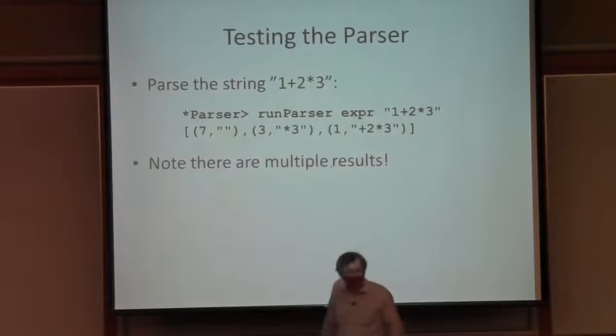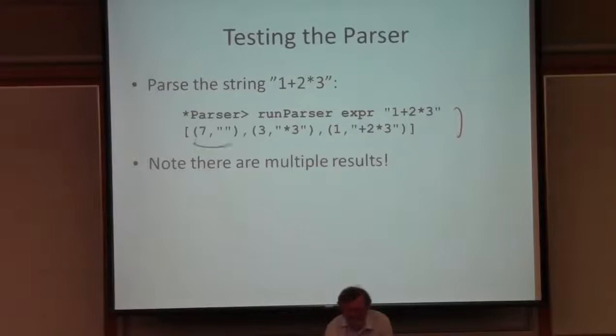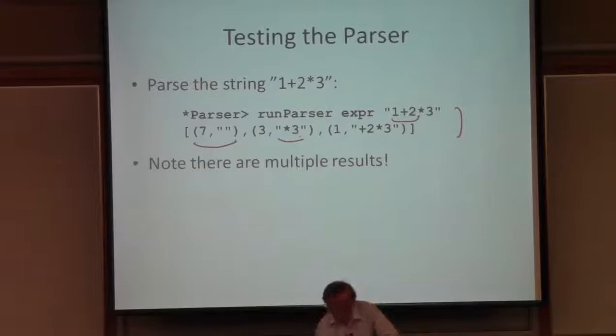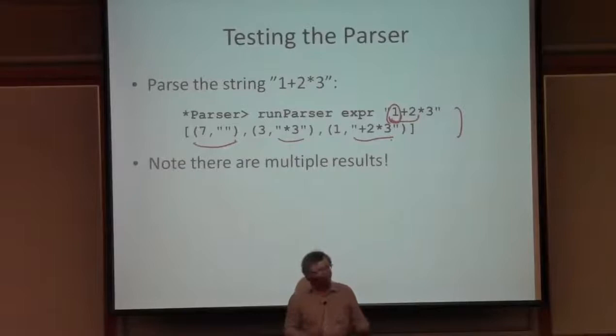If we try it out and parse the string '1 plus 2 times 3', this is what we get. You might think that string should evaluate to 7 — well, it does. It can return 7, leaving no input unparsed. But we also see other results: if parsing only accepts '1 plus 2', then it returns 3, leaving part of the string unparsed. And the parser can also stop just after parsing the 1. So what we're seeing is that our parser is backtracking, producing multiple possible parse results, not all of which consume the whole input.